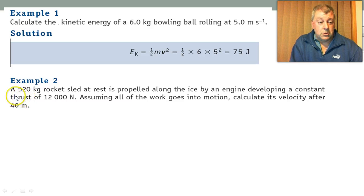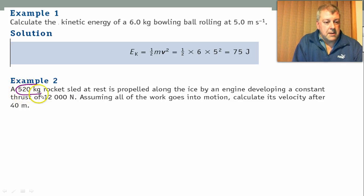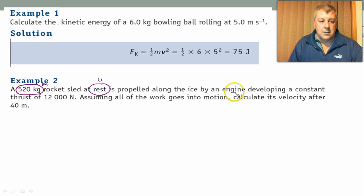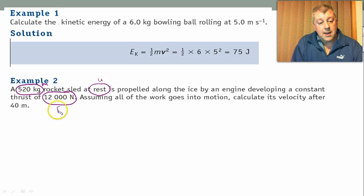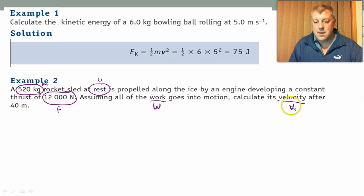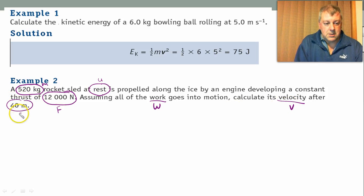Slightly more difficult question. Got a bit more noise in it. A 520 kilogram rocket sled at rest is propelled along the ice by an engine developing a constant thrust of 12,000 newtons. Assuming all the work goes into motion, calculate its velocity after 40 meters. So if we looked at this, we've got a mass. We're told that it's at rest. It has constant thrust, that would be F. And assuming all the work, that's W, goes into motion, and calculate its velocity V after 40 meters S.